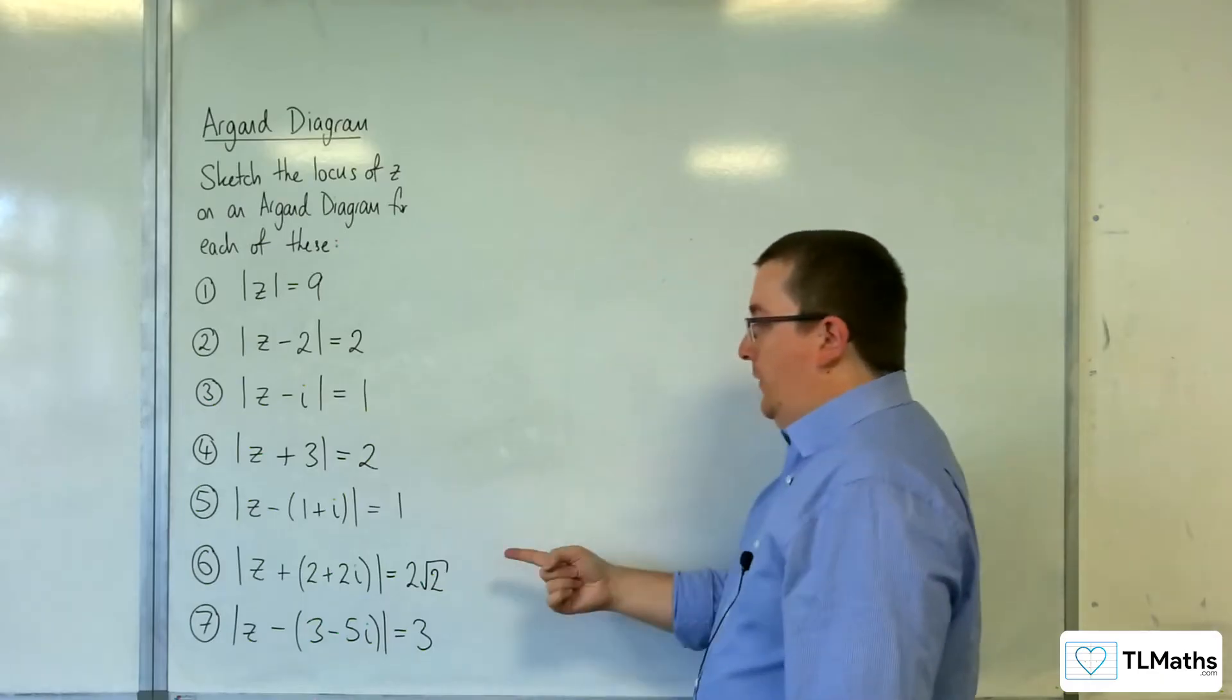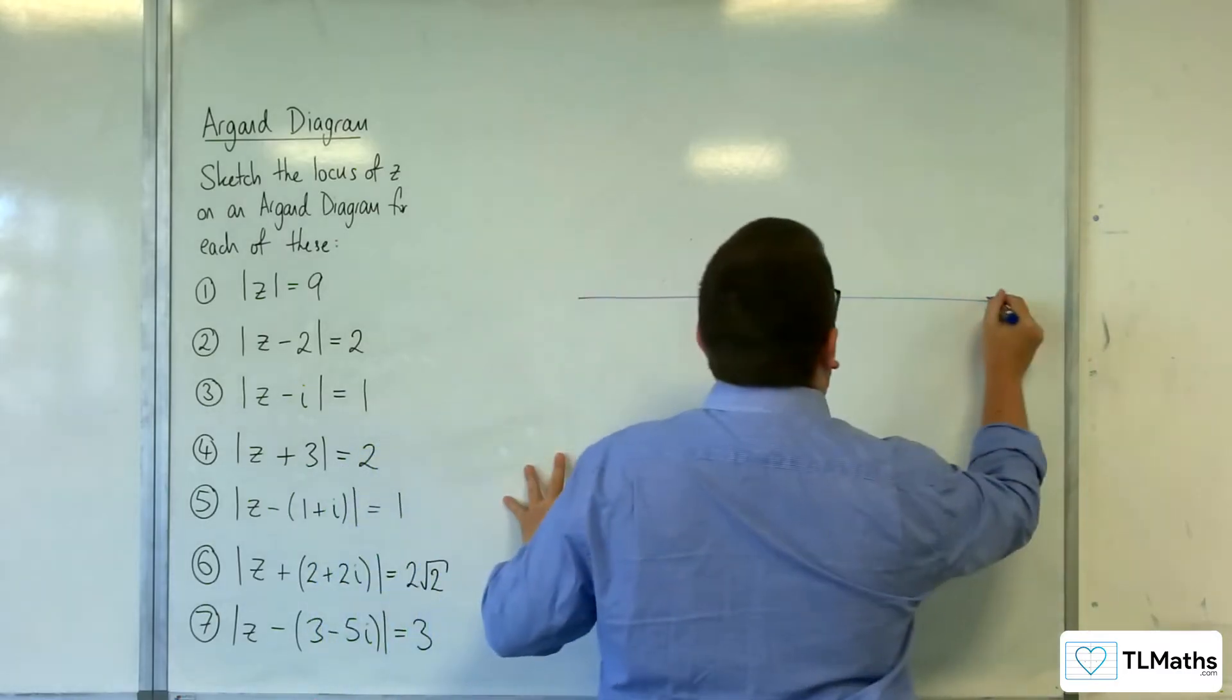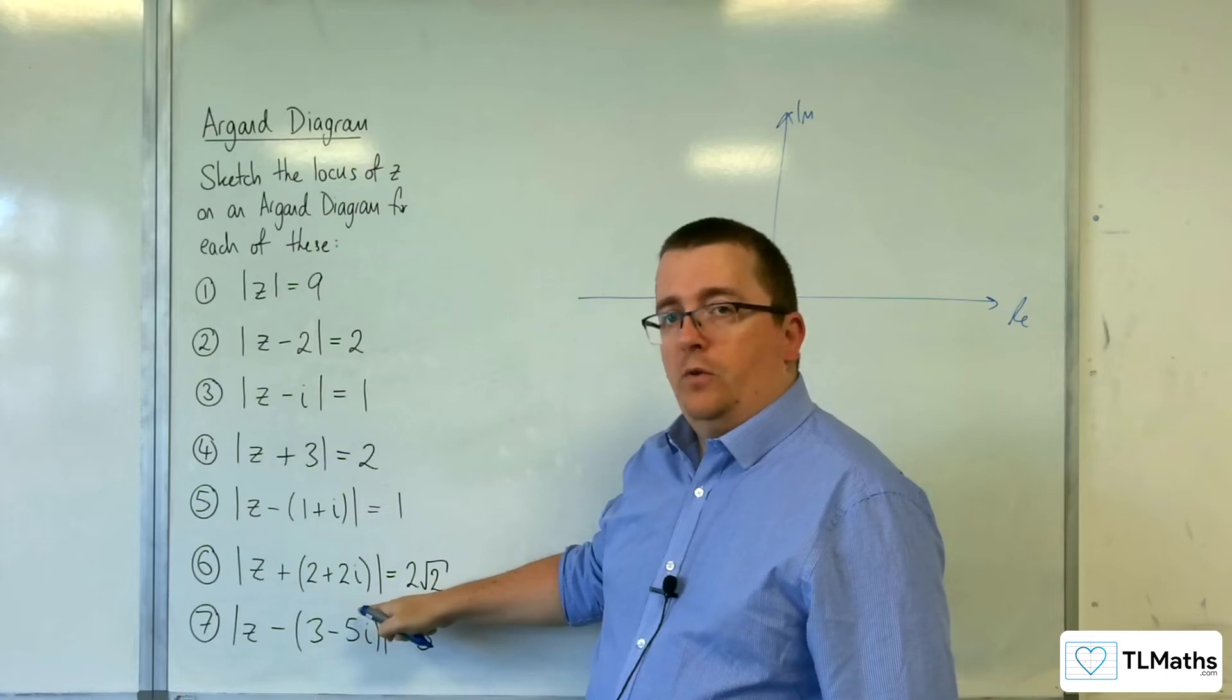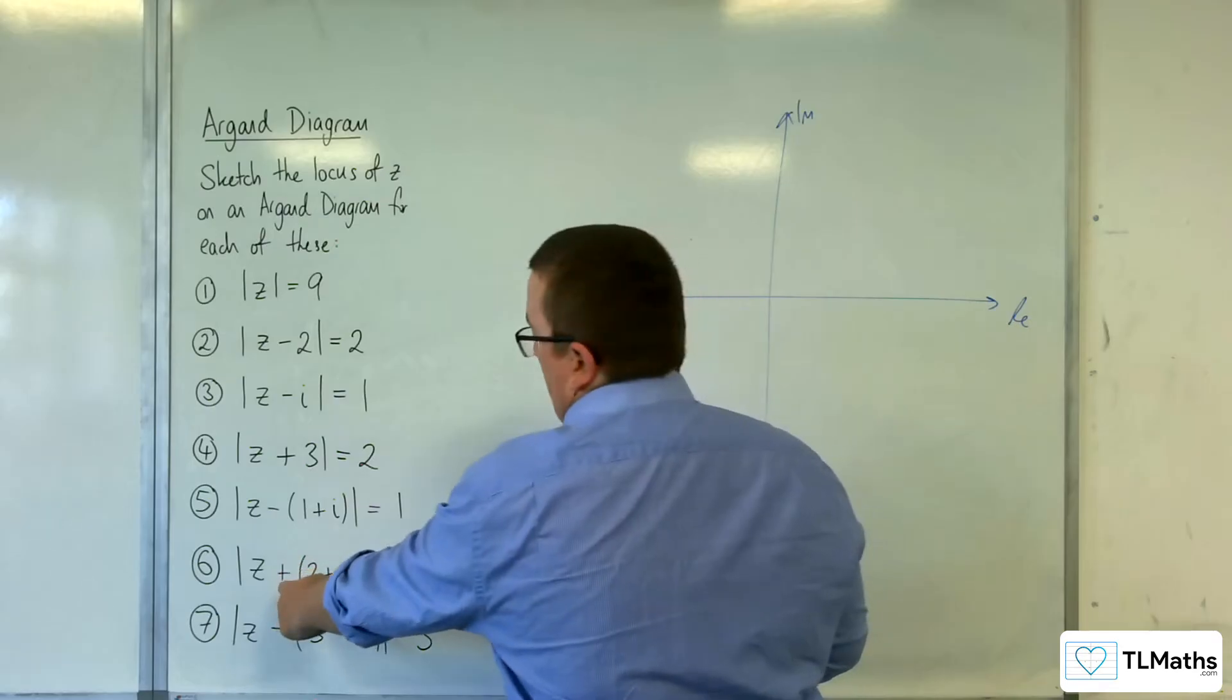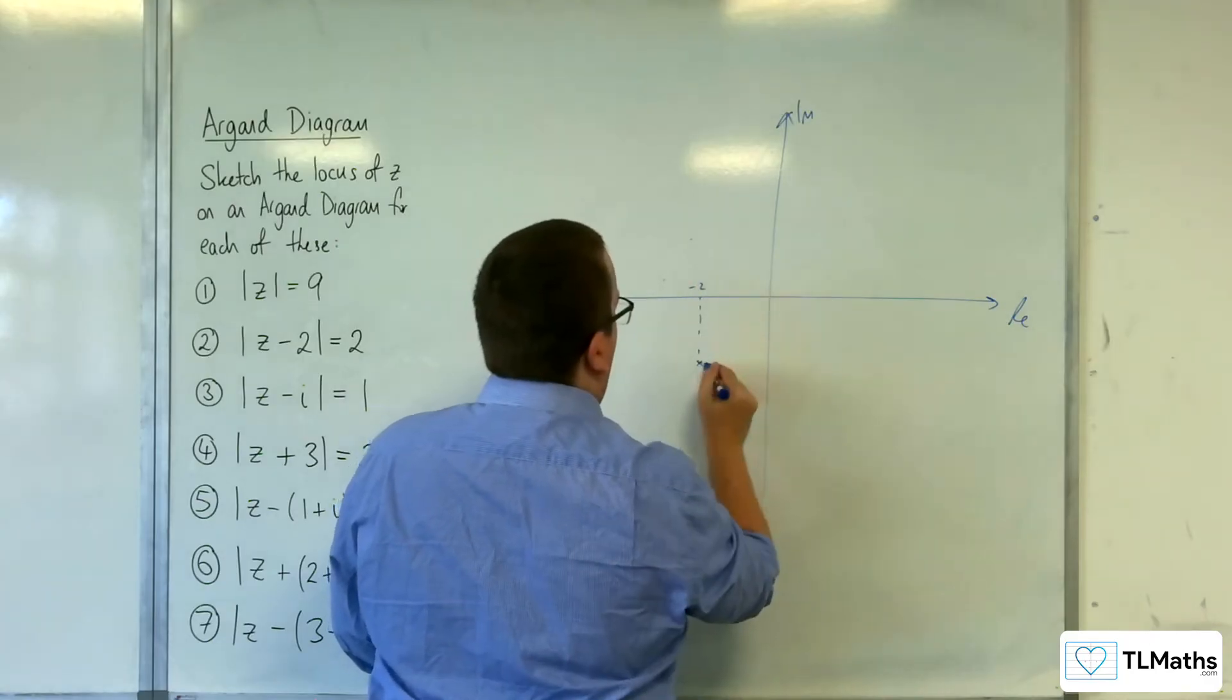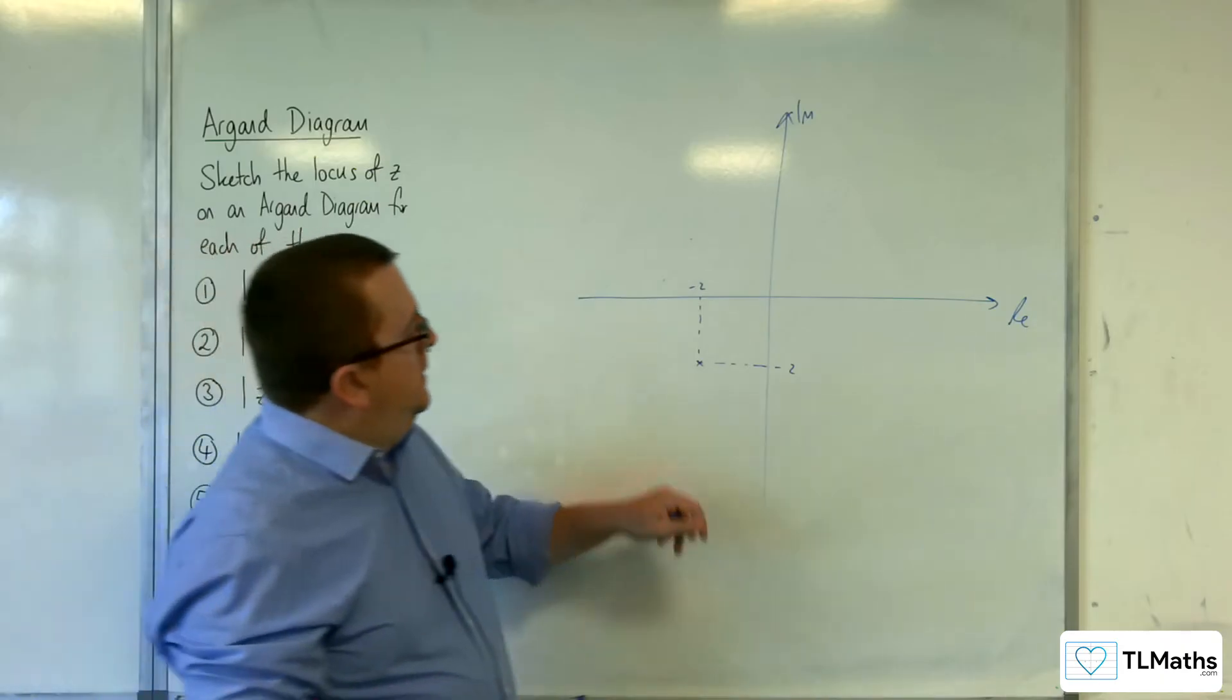Number 6. So z plus 2 plus 2i is equal to 2 root 2. This one is going to be centred at negative 2 take away 2i. Because you've got that plus there, we're going to be down here somewhere. So that's minus 2, minus 2. So that's going to be our centre, and it's got a radius of 2 root 2.